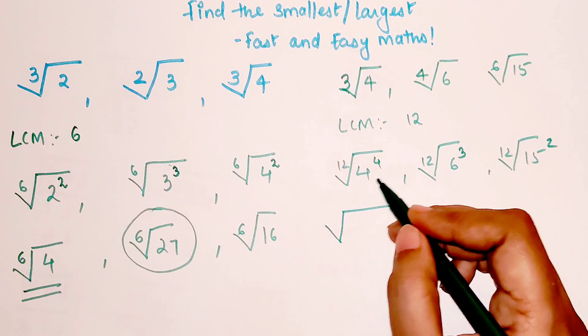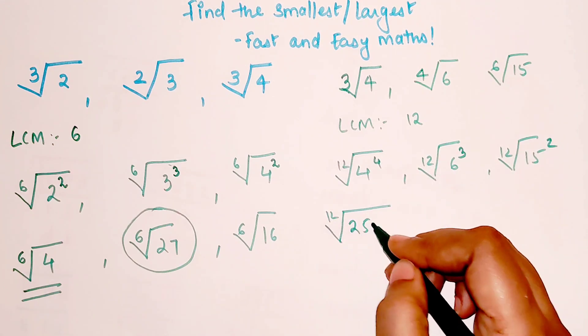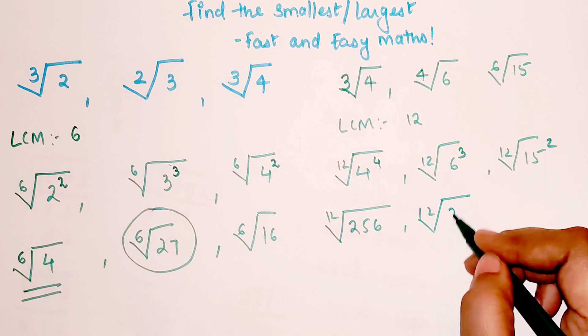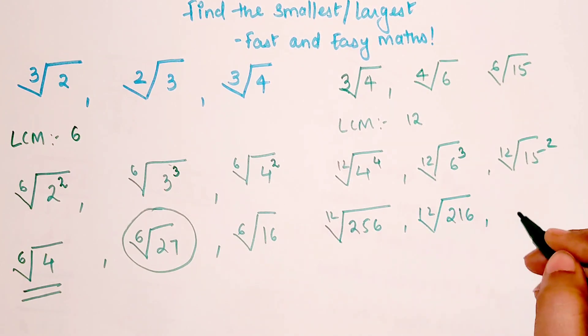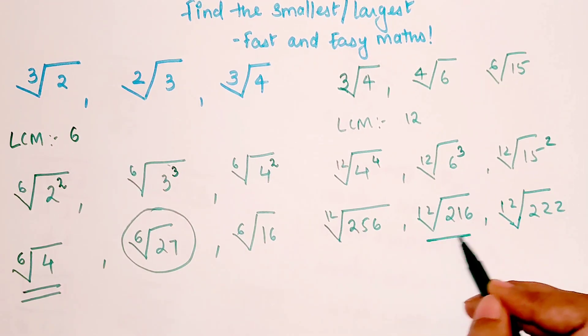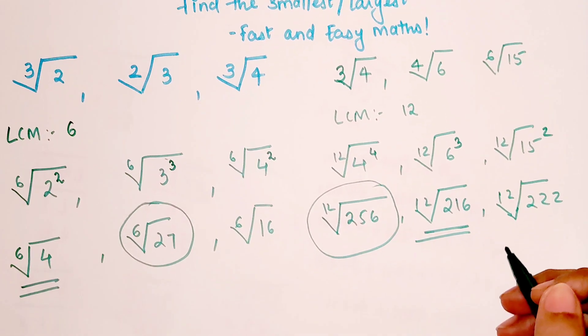So this is 12th root of 4 raised to 4, that gets you 256. 12th root of 6 cubed which is 216, and 12th root of 15 squared which is 225. So amongst this I can say this is my smallest and this value is my largest.